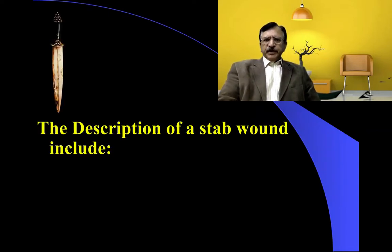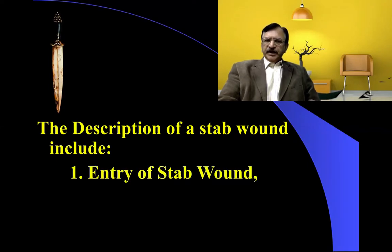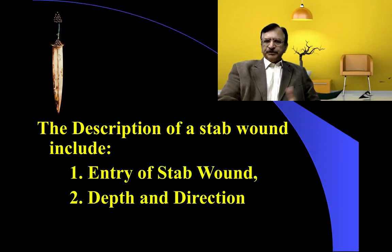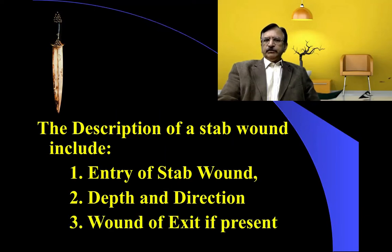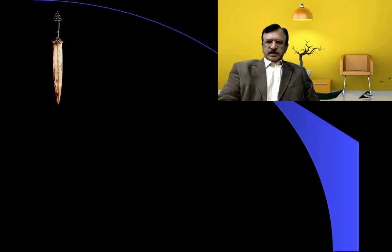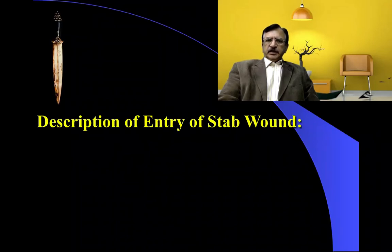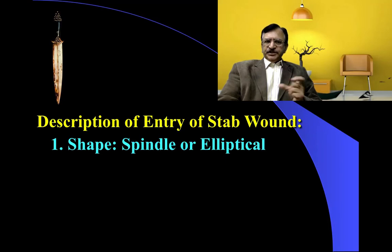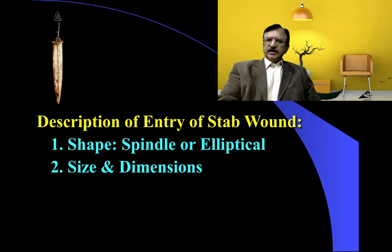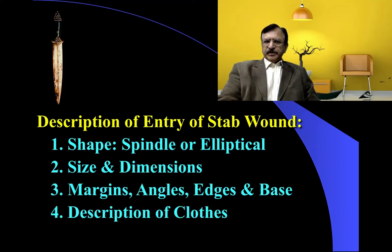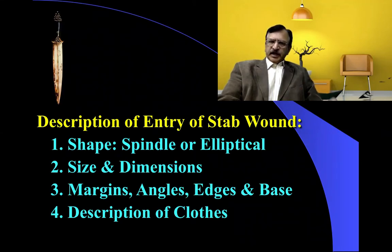When we describe a stab wound, it includes the entry of the stab wound, the depth and direction, and the wound of exit if present. In the entry wound, we discuss the shape — which may be spindle or elliptical — the size and dimension, margins, angle, edges, and the base. We also describe the clothing and whether the injuries correspond with cuts on the clothes.